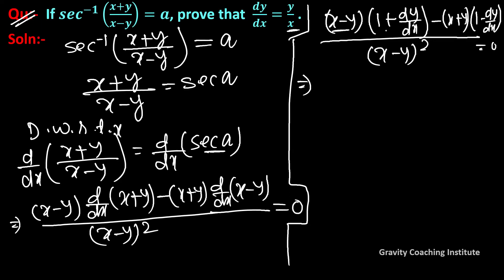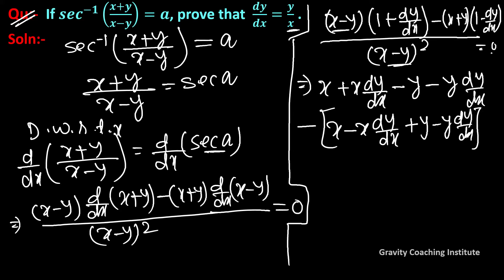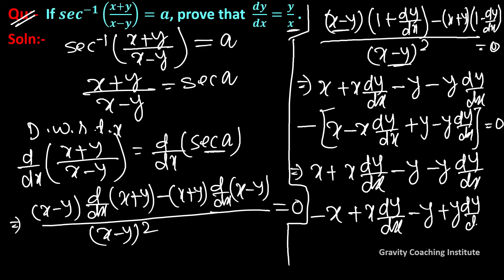Now multiply out: (x minus y) times (1 plus dy upon dx) gives x plus x dy upon dx minus y minus y dy upon dx. And (x plus y) times (1 minus dy upon dx) gives x minus x dy upon dx plus y minus y dy upon dx. Setting the numerator equal to 0: x plus x dy upon dx minus y minus y dy upon dx minus x plus x dy upon dx minus y plus y dy upon dx equals 0.